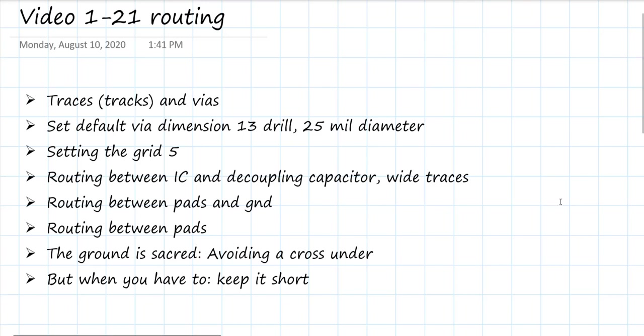In this video, we're going to start routing the traces on the board. There are two kinds of structures that we're going to create: traces, which are the connections between pads, and vias, which are the connections between traces on different layers.